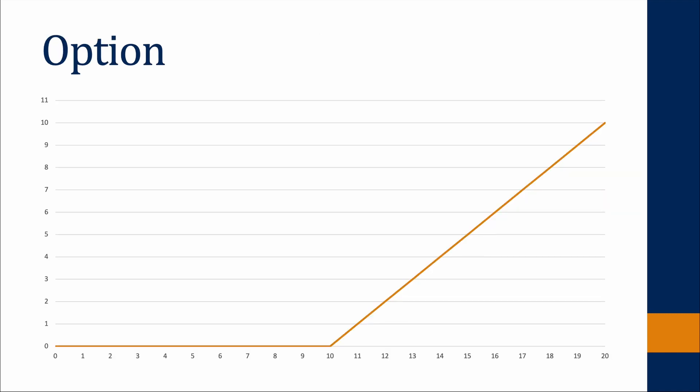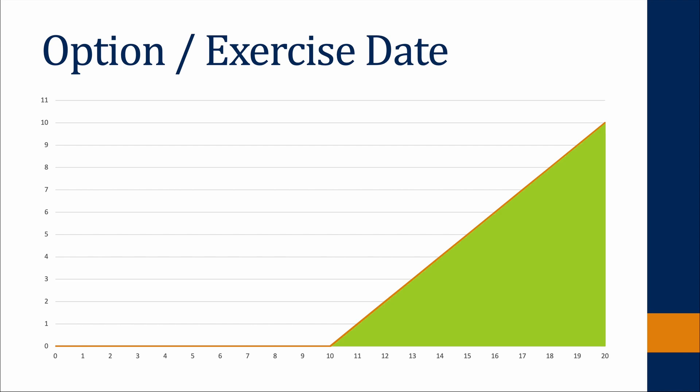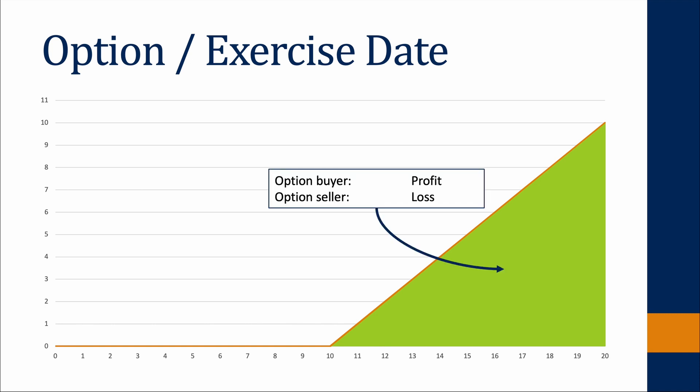This graph shows the value of the call option depending on the share price on the exercise date. The value of the option is the difference between the stock price and 10 Euro, since one could exercise the option and buy the stock from Goldman Sachs for 10 Euro and then sell it on the stock exchange. If the stock price is below 10 Euro, the value of the option is zero, because it would be cheaper to buy the stock on the stock exchange, since there is no obligation to exercise the option.